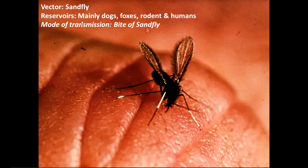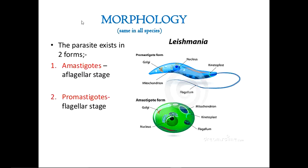Regarding morphology, there are two main forms. The first is the promastigote form, which has flagella. The second is the amastigote form, which is devoid of flagella entirely.